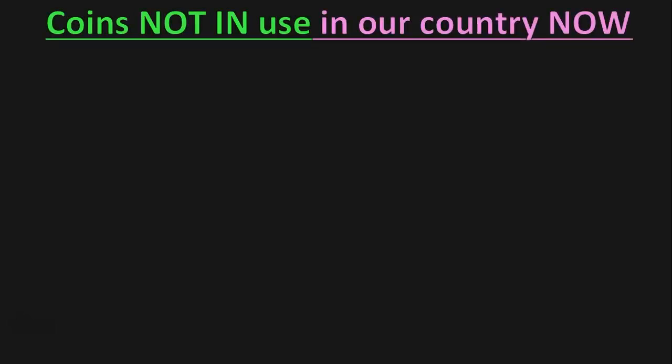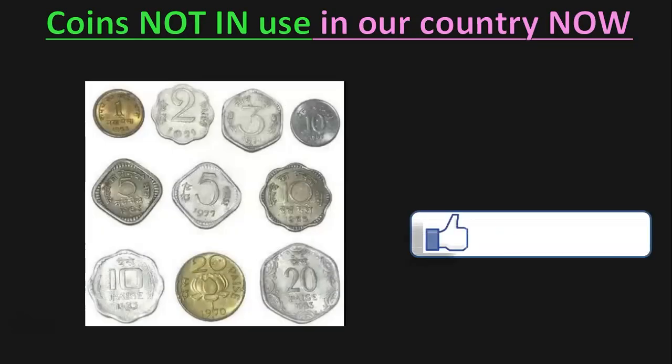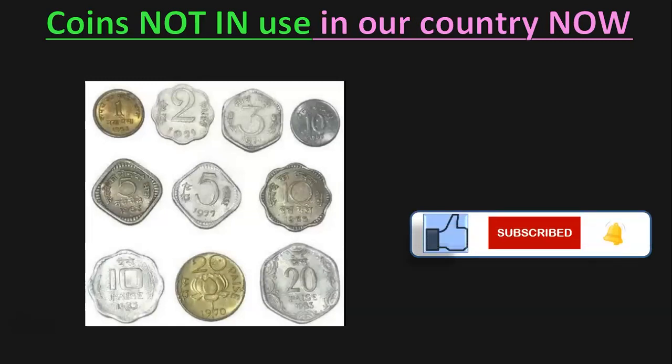Now let us take a look at the coins that are not in use in our country now. These are some of the coins that were used in earlier days: 1-Paise, 2-Paise, 3-Paise, 10-Paise, 5-Paise in two different forms, another 10-Paise, and another 10-Paise in different forms, and a 20-Paise in two different forms. These coins are not in circulation in our country now.